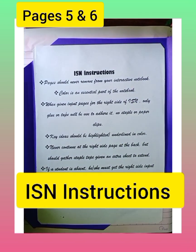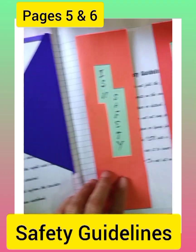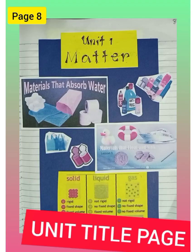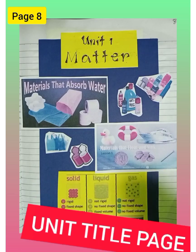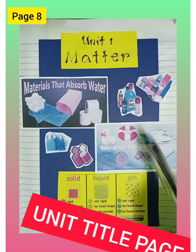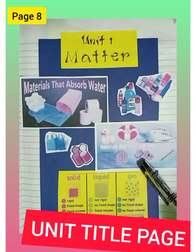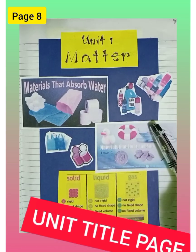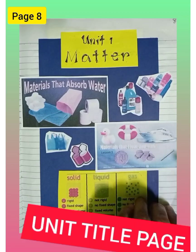On pages 5 and 6, glue the ISN instruction and the ISN guidelines. Next is the unit title page. Create a colorful drawing or get pictures that relate to the unit we are studying — be colorful! Here is an example of a unit title page: Unit 1, Matter. Everything here is related to matter — solid, liquid, gas, materials that float and sink, biodegradable and non-biodegradable materials, and materials that absorb water. Everything is related to the subject matter.